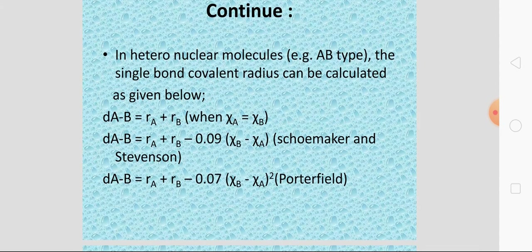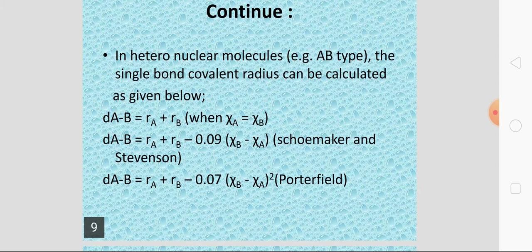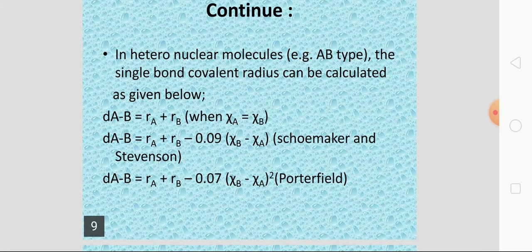In the case of heteronuclear molecules, where two different types of atoms form an AB type molecule, the covalent radius can be calculated. If the electronegativity of both atoms is the same, then the inter-nuclear distance is RA + RB, and you take half to get the covalent radius.